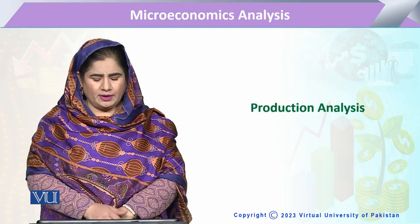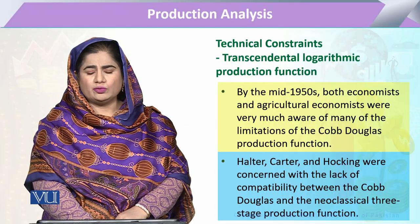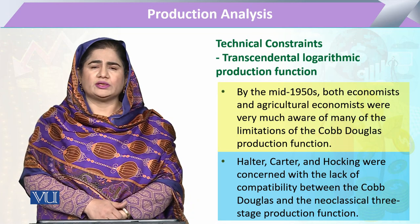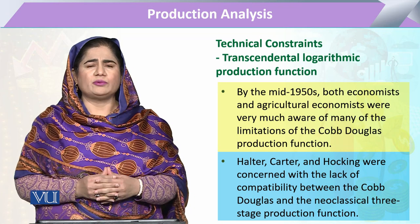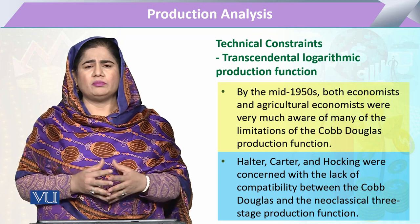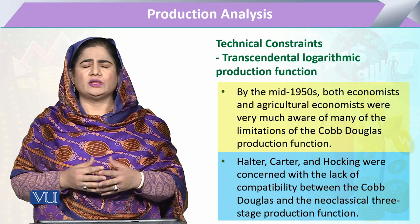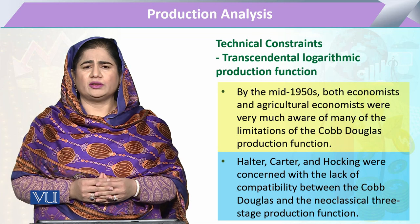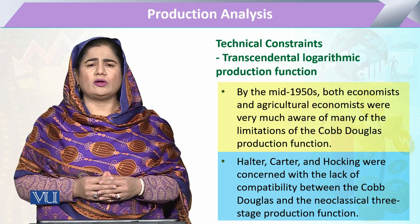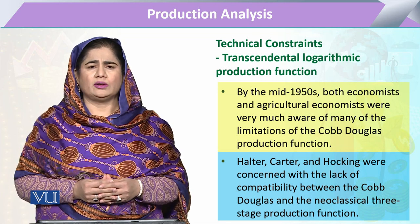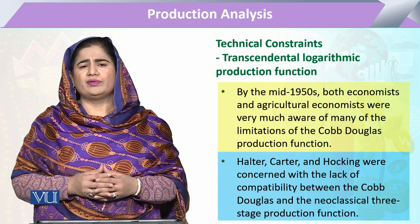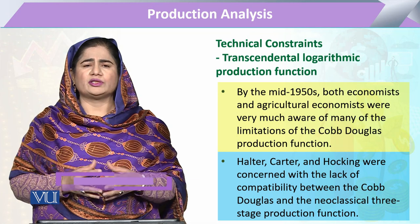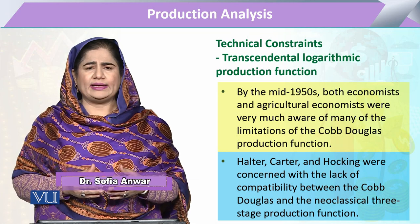Module 136 in production analysis. We are going to study the Transcendental Logarithm production function. Previously we have studied various types of production functions: the simple linear production function, the fixed proportion, the Leontief production function, the Cobb-Douglas production function, and the CES — constant elasticity of substitution. They all have gradually improved the capacity of economists to explain the production function in technical and mathematical form.